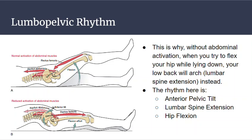Sometimes, if people cannot reduce this anterior tilt, that suggests their abdominal muscles are too weak to do this exercise. Maybe you need to accommodate by going into knee flexion and decreasing that moment arm of the external torque.